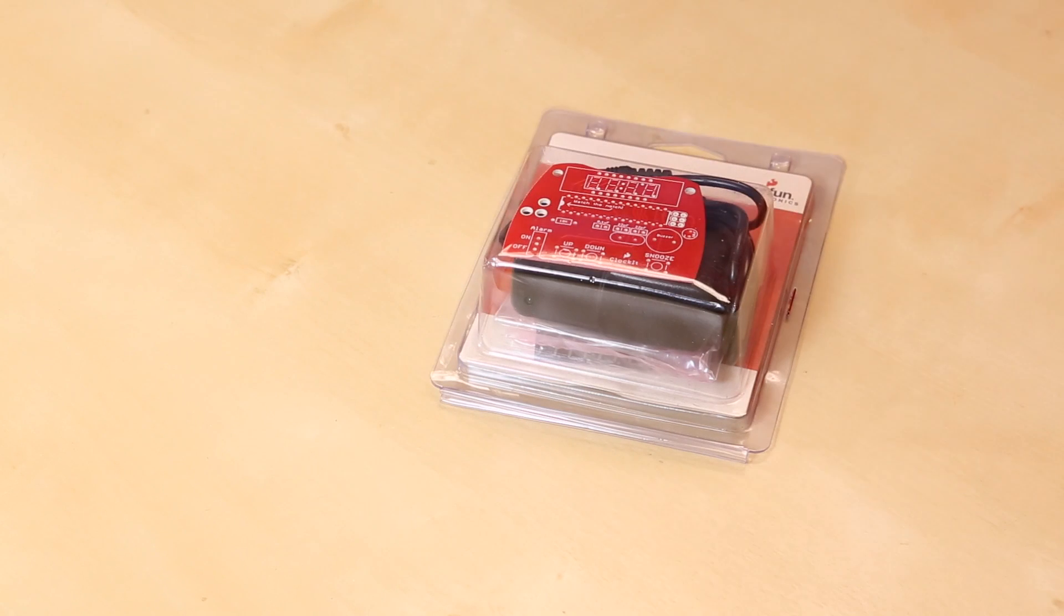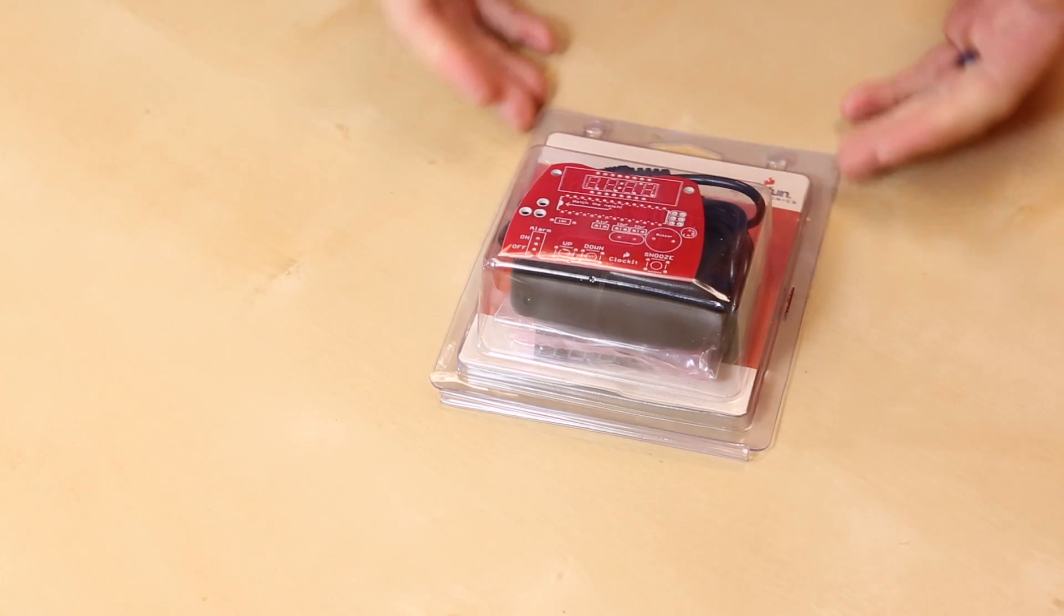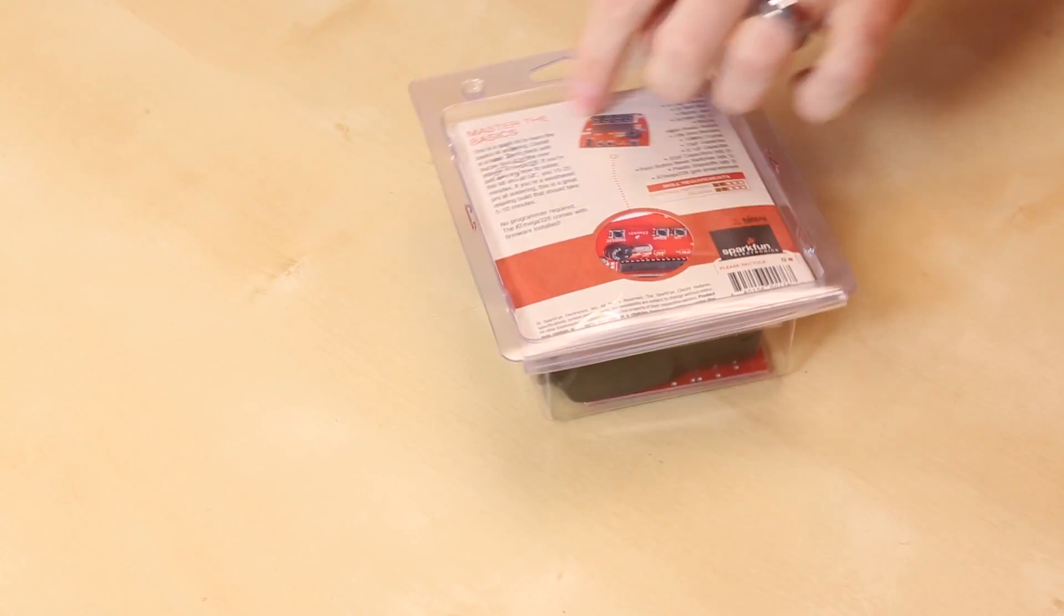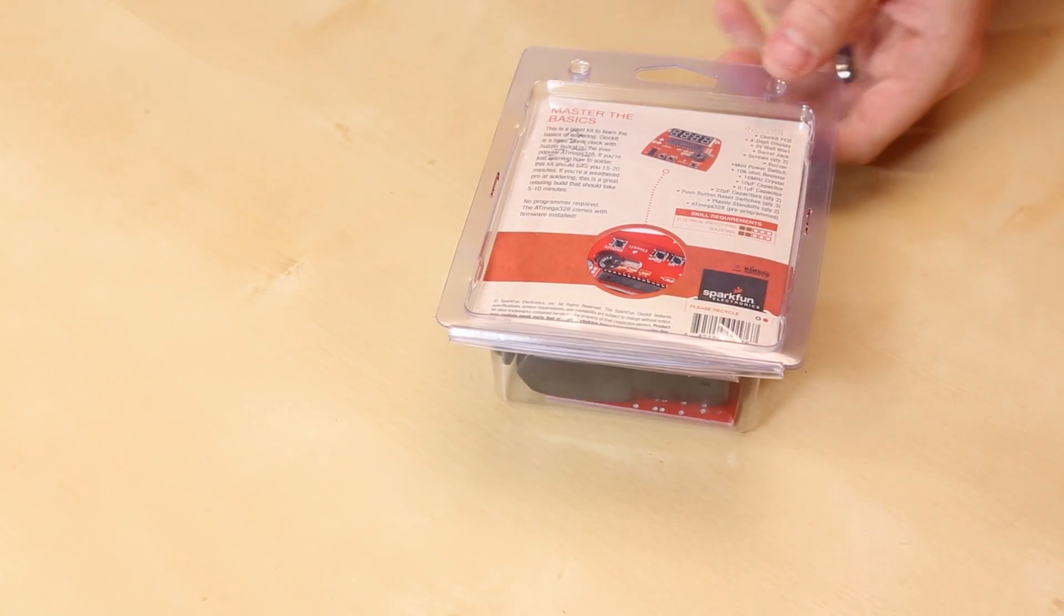First up, this is the Clock-It kit, now in fancy, beautiful retail packaging. It has this lovely clamshell, this nice little insert on the back, a little barcode.